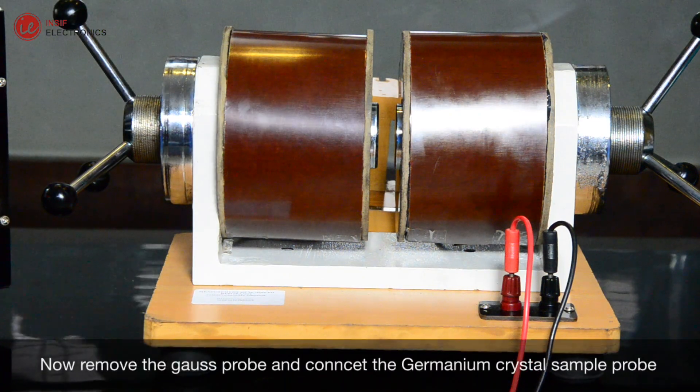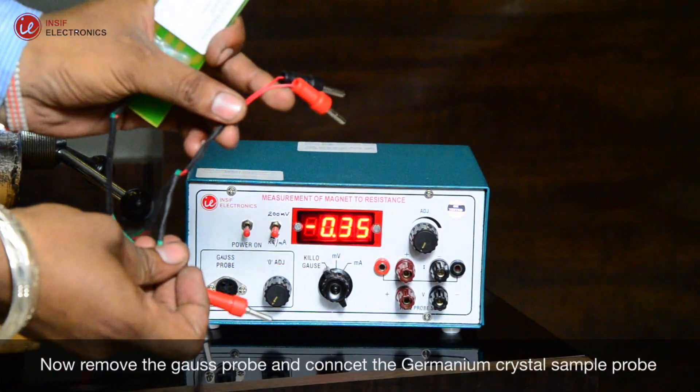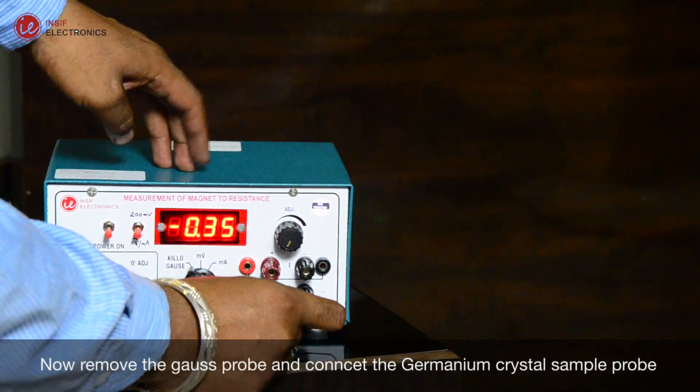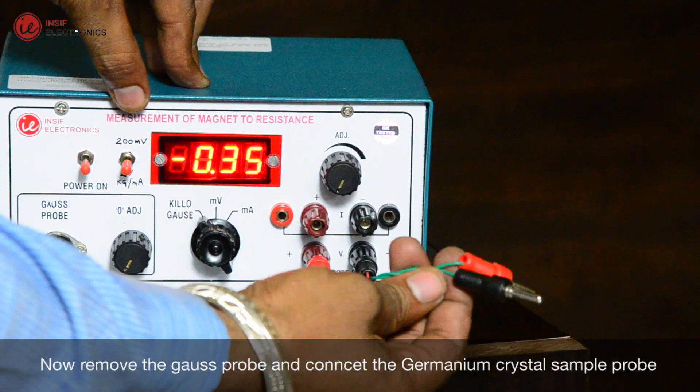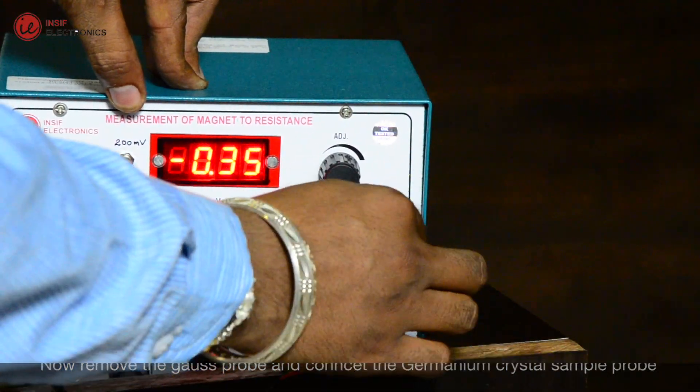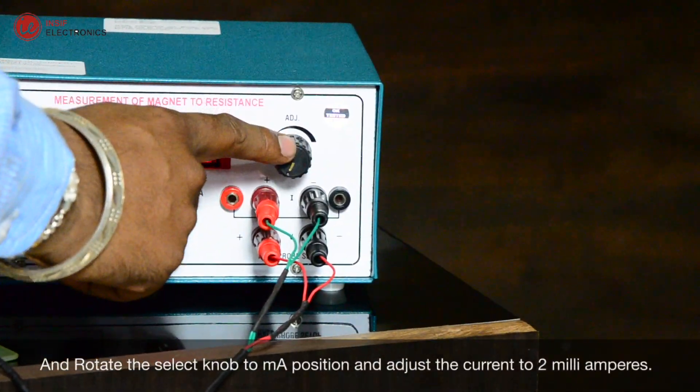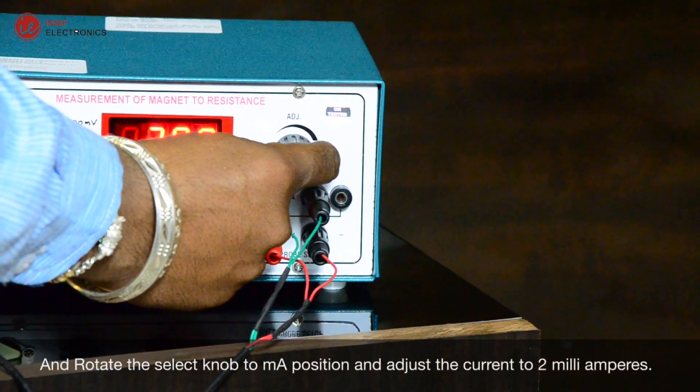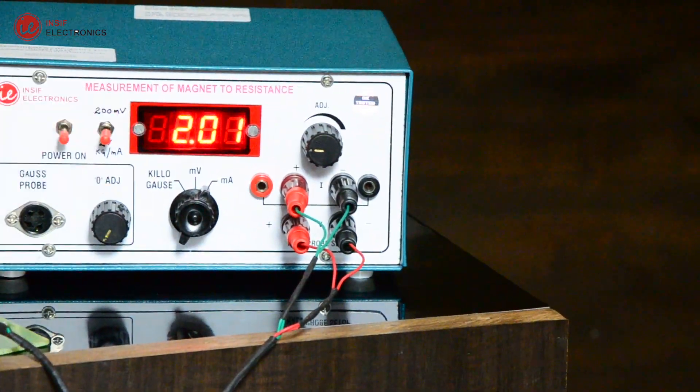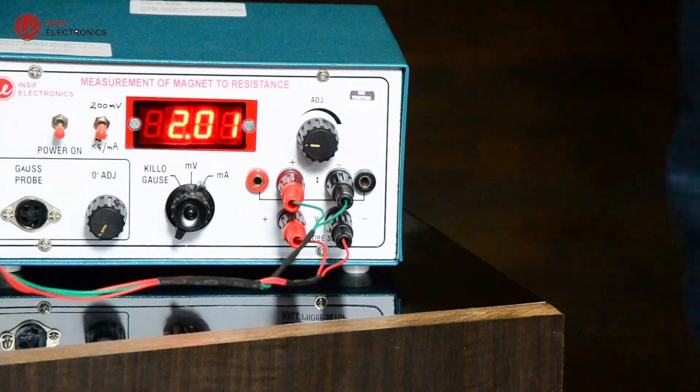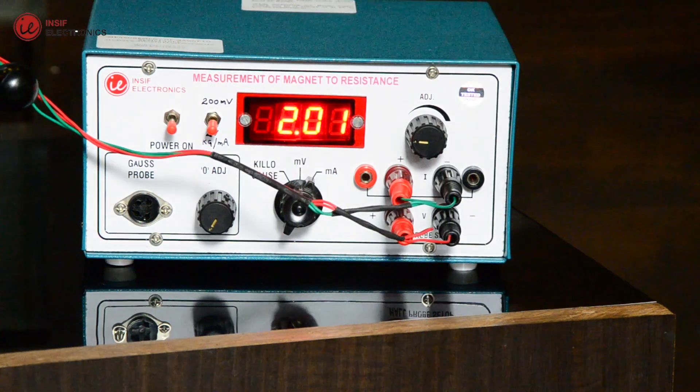Now remove the gauze probe and connect the germanium crystal sample probe. Rotate the select knob to mA position and adjust the current to 2 milliamperes. This is going to be the constant current flowing through the germanium crystal.